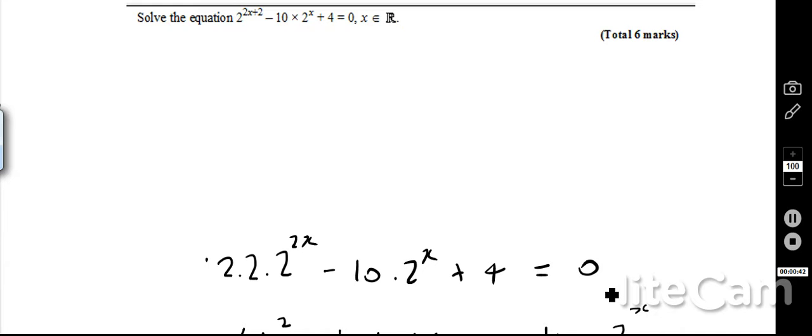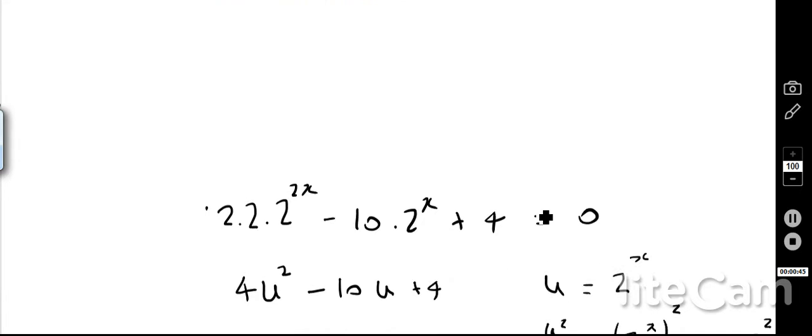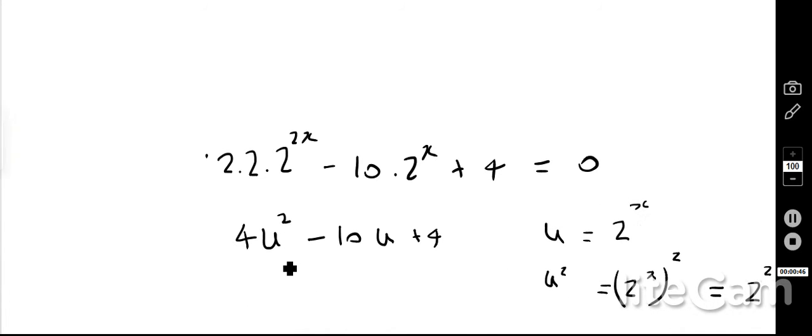The reason that I do that is because I can now notice that I can rewrite this in terms of u, so I can say that u is equal to 2 to the power x, and therefore u squared is going to be 2 to the power x squared, which, if I remember my laws of indices, is going to be 2 to the 2x.